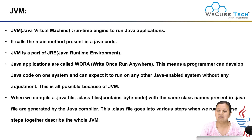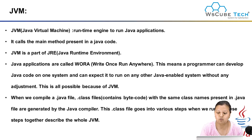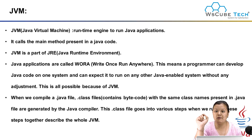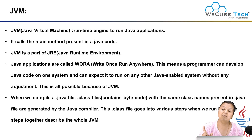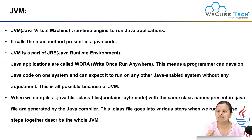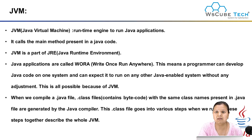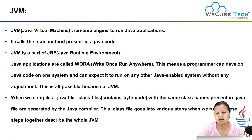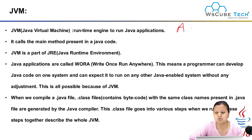So when we talk about compiling a Java file, we compile it and it produces a class file. The class file contains the same class name which is present in your Java file. Remember this thing. So when you compile your file, the name of your class file will match the name of your class. For example, if your class is A, your file is A.java.